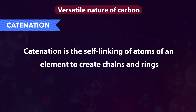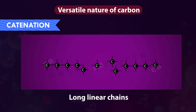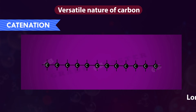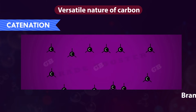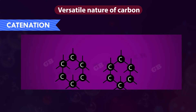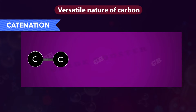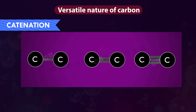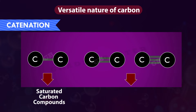Due to this property, carbon forms large molecules in the form of long linear chains, branched chains, and ring chains. In addition, carbon atoms may be linked by single, double, and triple bonds. Carbon compounds with single bonds are saturated carbon compounds, while those with double and triple bonds are called unsaturated carbon compounds.